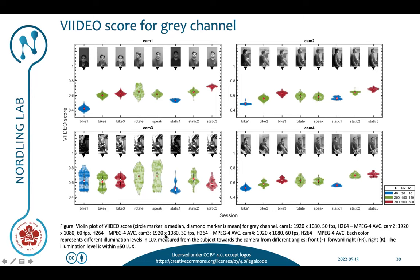Camera number three is one of the mobile phones that we are using, and this one is surprisingly good at low light conditions. We can see that we have larger variation here and it's a little bit poorer for the static ones, but it's surprisingly good in low light conditions, and that's what makes the video score more even in this case.